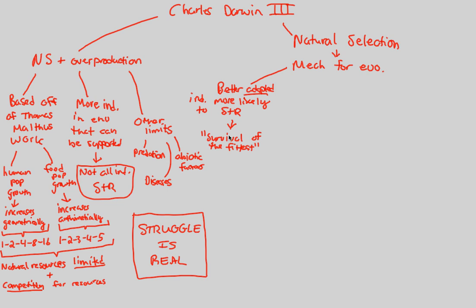Something that exams always like to ask about: fitness, or being fit — the survival of the fittest — is not about being the strongest, the fastest, or the smartest. Fitness is defined as the ability to have offspring. Do not ever forget this. Everybody who says this phrase says it wrong. Fitness is simply equal to the ability to have offspring. The most fit individual, the survival of the fittest, means the individual who will make offspring and pass on their genes is the fittest.